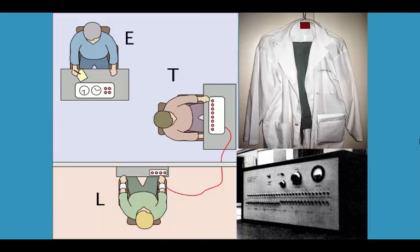Two volunteers, recruited via newspaper advertisement, would come in at a time. Randomly — by drawing from a hat — one would be the teacher and one the learner. If you're the learner, you sit in a separate room with a list of word pairs to memorize. If you're the teacher, you sit in the room with the experimenter, Stanley Milgram, in front of a shock device. Milgram told subjects he believed punishment would increase memory.